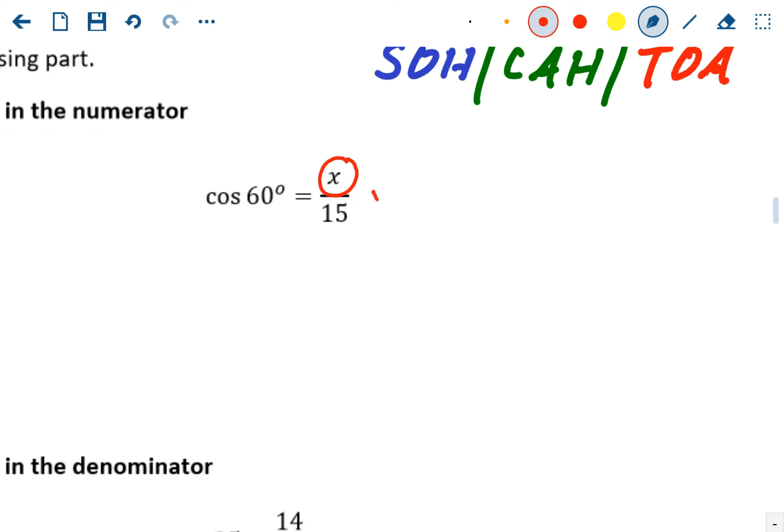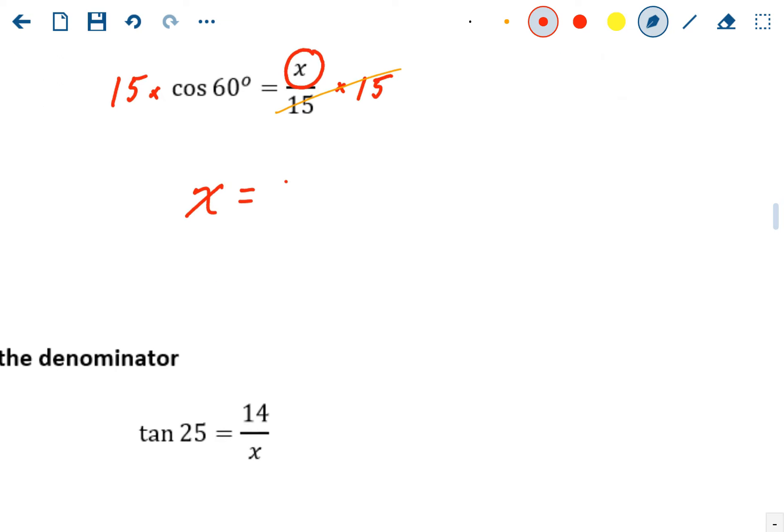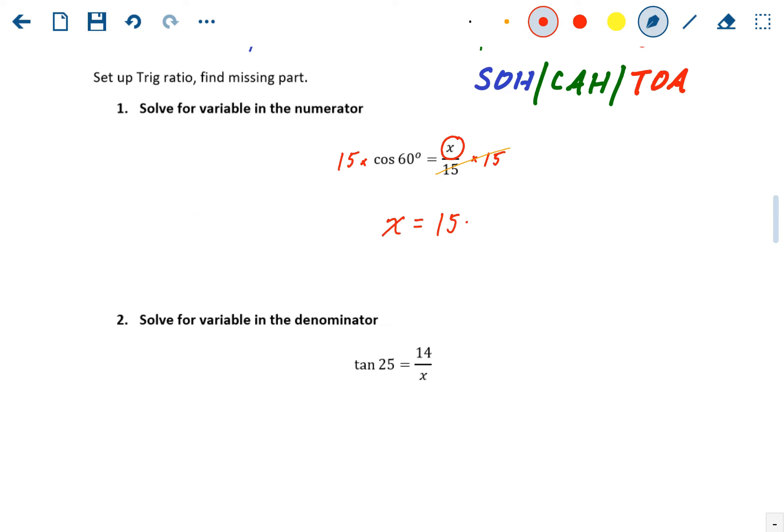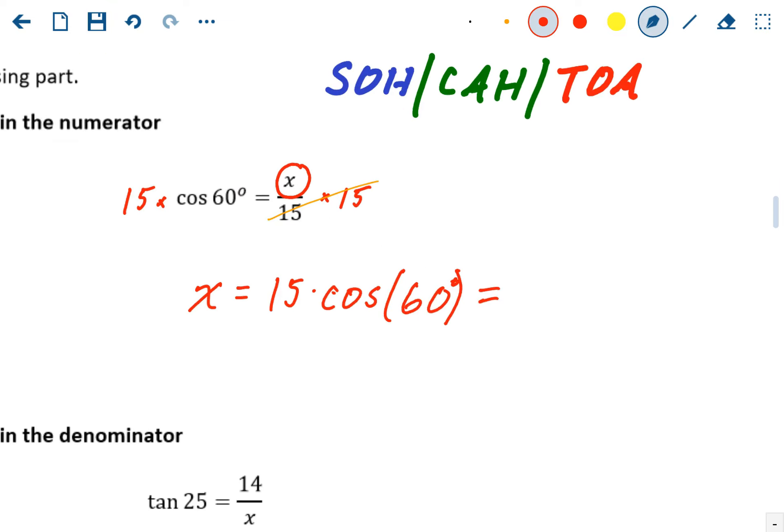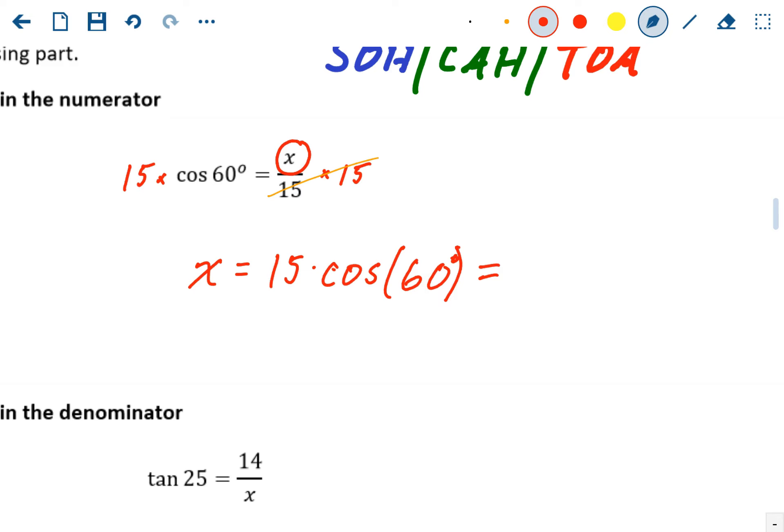So if you have the variable on top of a fraction, you always need to get rid of the bottom of the fraction. So to get rid of the bottom of the fraction, you're just going to multiply both sides by 15. The 15 parts cancel out. So really we're left with x equaling 15 times the cosine of 60. So 15 times cosine of 60, just punched into the calculator, you should get about 7.5.